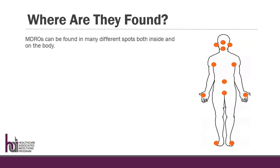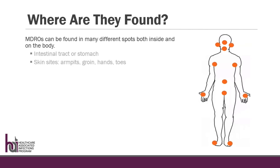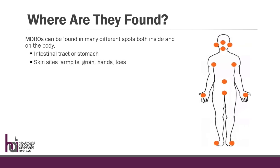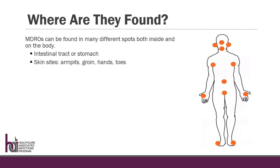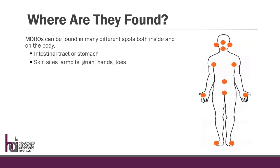MDROs can be found in many different spots both inside and on the body. Different MDROs colonize different body sites. Some prefer the intestinal tract and stomach, where others tend to grow on skin sites such as the armpits, groin, hands, and toes.